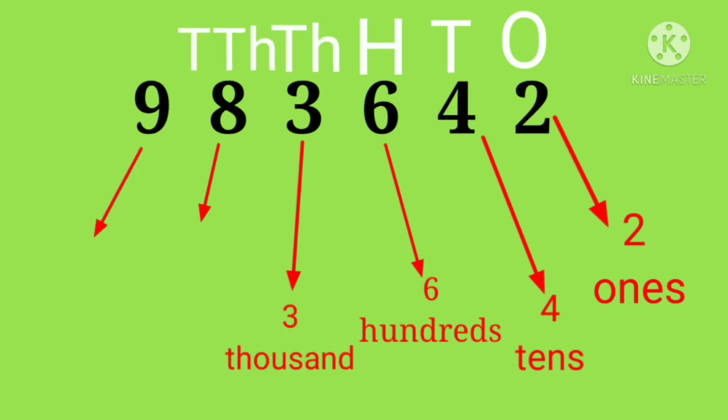8 under ten thousands, so it is 8 ten thousands. And 9 under lakhs, so it is 9 lakhs. These are the place values.